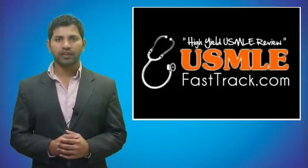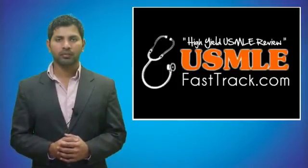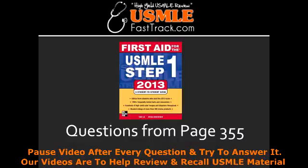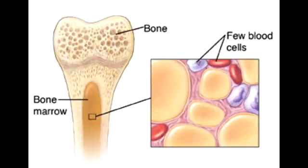Welcome to USMLEFastTrack.com. The section we're going to talk about today is from First Aid for the USMLE Step 1, 2013 edition, page 355. Aplastic anemia is a disease in which the bone marrow and the blood stem cells that reside there are damaged.